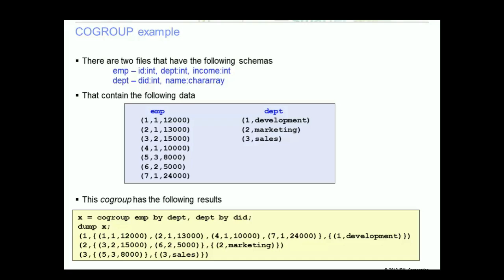Executing X equals co-group EMP by DEPT and DEPT by the field DID would produce a tuple with a value of 1, 12000, and then a bag within there that has the tuple 1, 1, 12000; a second tuple with the values of 2, 1, 13000; and a tuple with the values of 1, development.